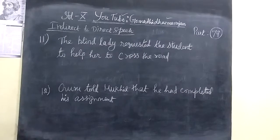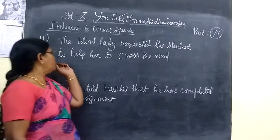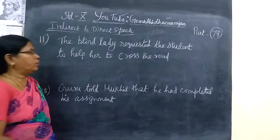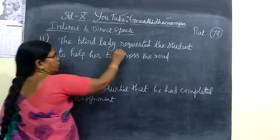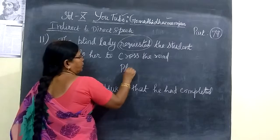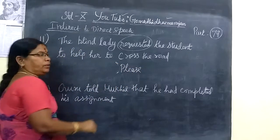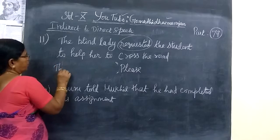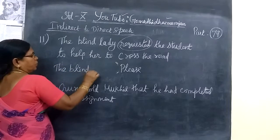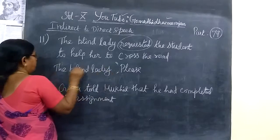And here is the 11th one: 'The blind lady requested the student to help her to cross the road.' Here, 'requested' — when you see 'requested', one way you have to write 'please'. Requested means you are writing 'please'. So here you write: 'The blind lady' — and what we are going to write is direct, and what is given is indirect.